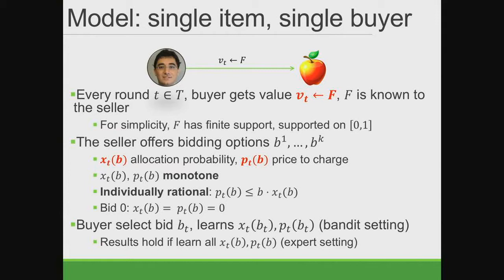We ask the following question: if the seller knows beforehand that bidders are using no-regret learning over time, can the seller extract additional revenue? A quick answer is yes, even when there's only one buyer and the seller is selling a single item each round. Formally, there's a buyer, and in each round a value is sampled from some fixed distribution, which is also known to the seller. The seller can offer some bidding options, each with two parameters: an allocation probability and a price.